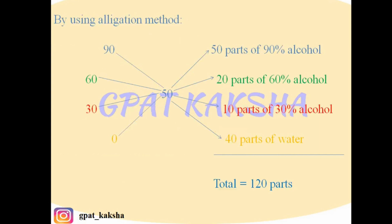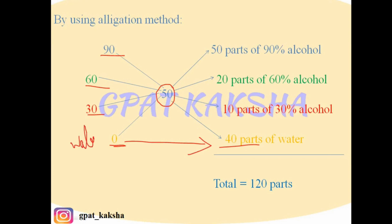Applying this allegation method to our problem: the available strengths are 90%, 60%, 30%, and 0% for water. The desired strength 50 is placed in the center. First, we subtract 50 from 90, getting 40 parts — this 40 parts is in front of water (0%), so water is required in 40 parts. Next, subtracting 50 from 60 gives 10 parts, and this 10 parts is in front of 30% alcohol, so 30% alcohol is required in 10 parts.